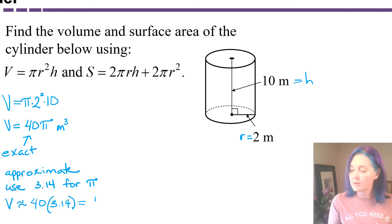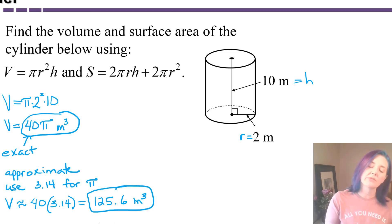Okay, that comes out to be 125.6, and I still need to put the cubic meters. So if they ask you for an exact answer on the volume, you'd say 40 pi cubic meters. If they ask you for an approximation using 3.14 as pi, you'll say 125.6 cubic meters.